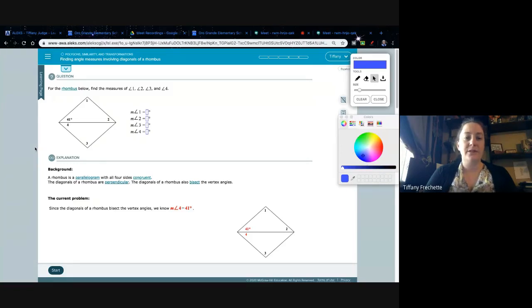Finding angle measures involving diagonals of a rhombus. So first we need to know what is a rhombus. Down here in background, if you're not writing notes, you should be writing notes. We should be adding to these each time we do a topic.